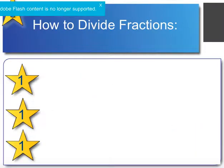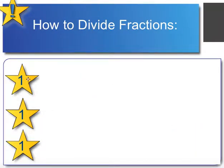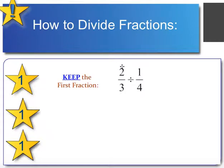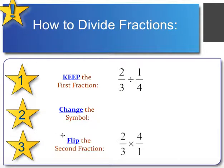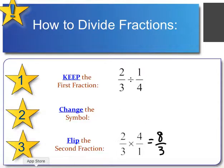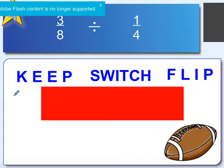When we are dividing fractions, we have three steps. Number one, we keep the first fraction. So if we are taking 2 thirds divided by 1 fourth, we keep 2 thirds. Second, we change the symbol — the division sign becomes multiplication. Third, we flip the second fraction. So we have 2 thirds times 4 over 1. We multiply: 2 times 4 is 8, 3 times 1 is 3, giving us 8 thirds.